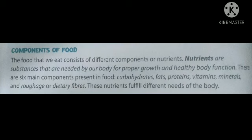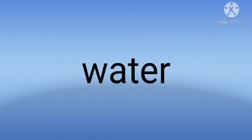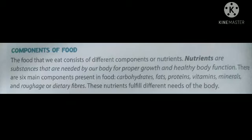There are six main components or nutrients present in the food. Number 1: Carbohydrates. Number 2: Fats. Number 3: Proteins. Number 4: Vitamins. Number 5: Minerals. Number 6: Roughage or Dietary Fibers. And lastly, Water. These nutrients fulfill different needs of the body.